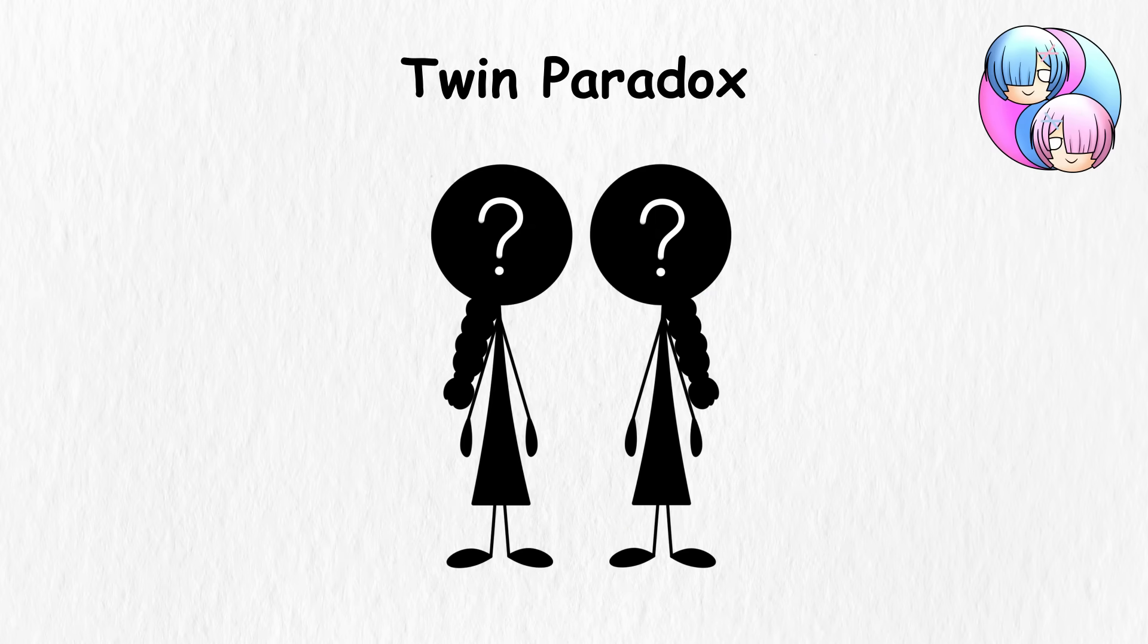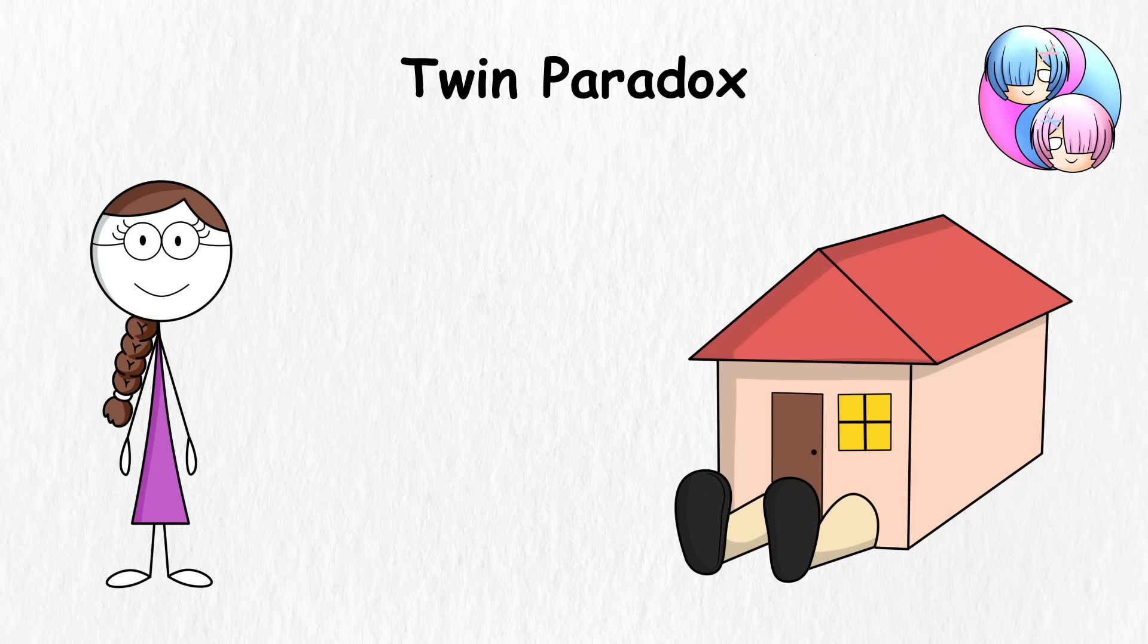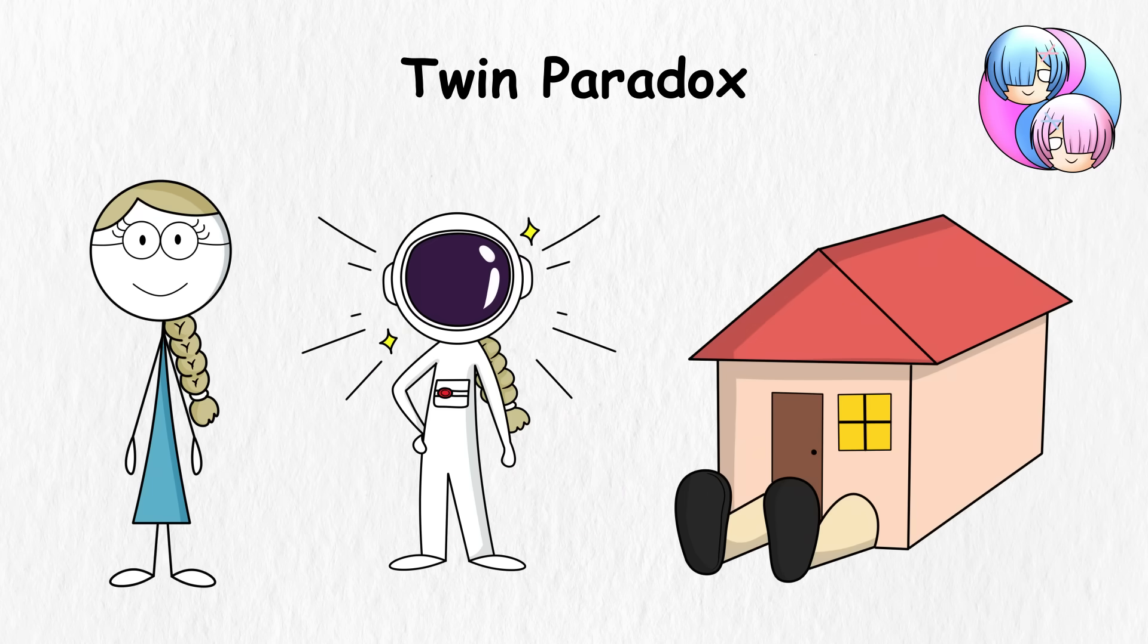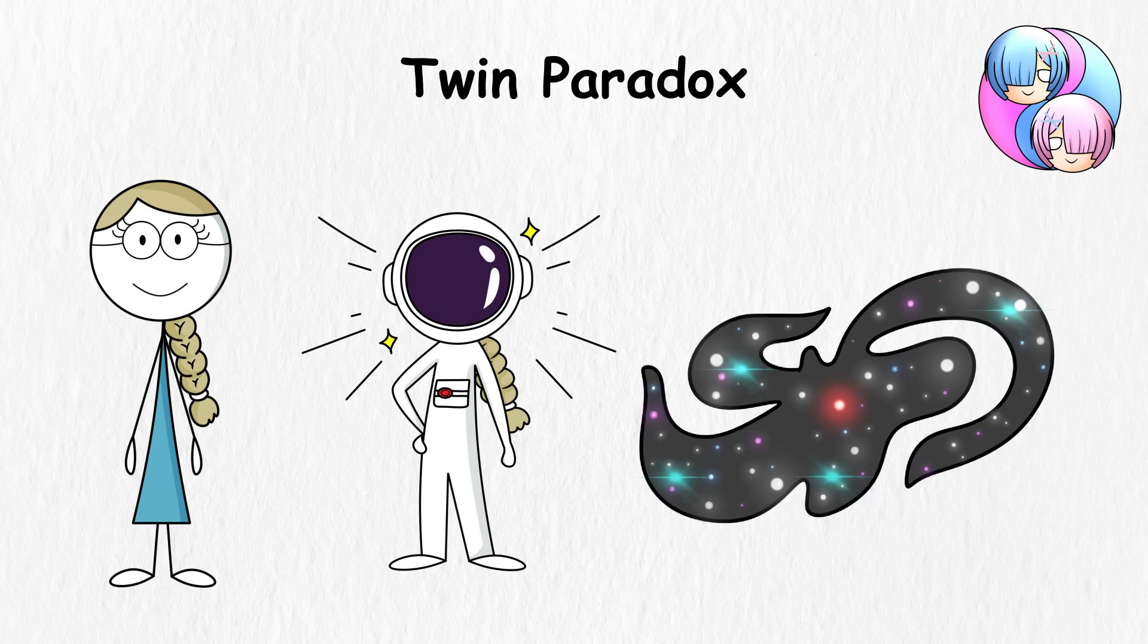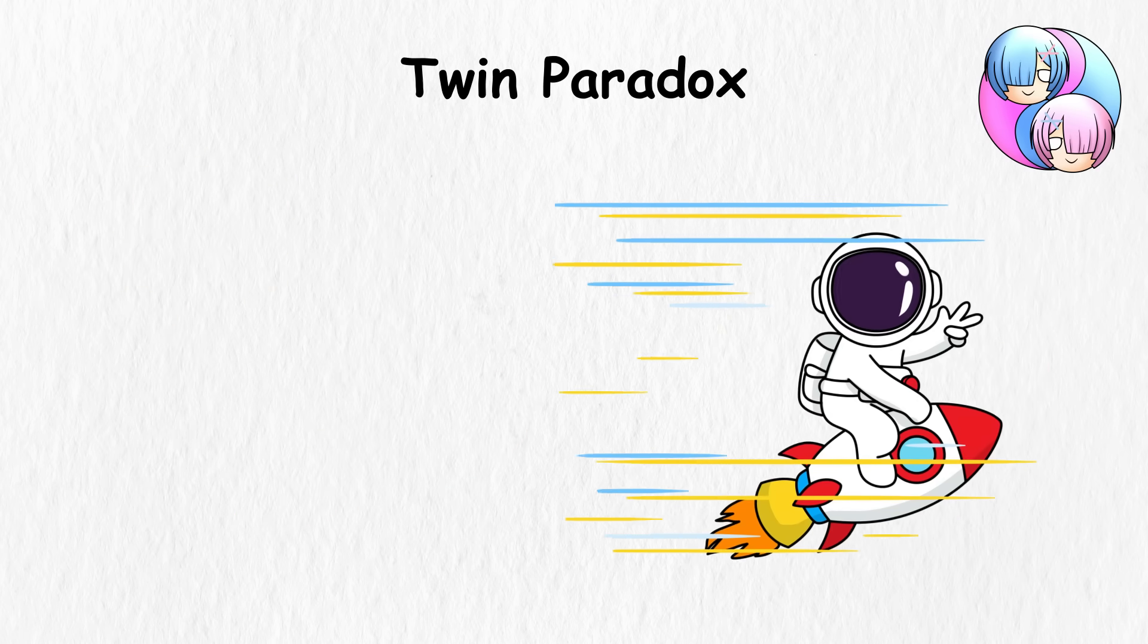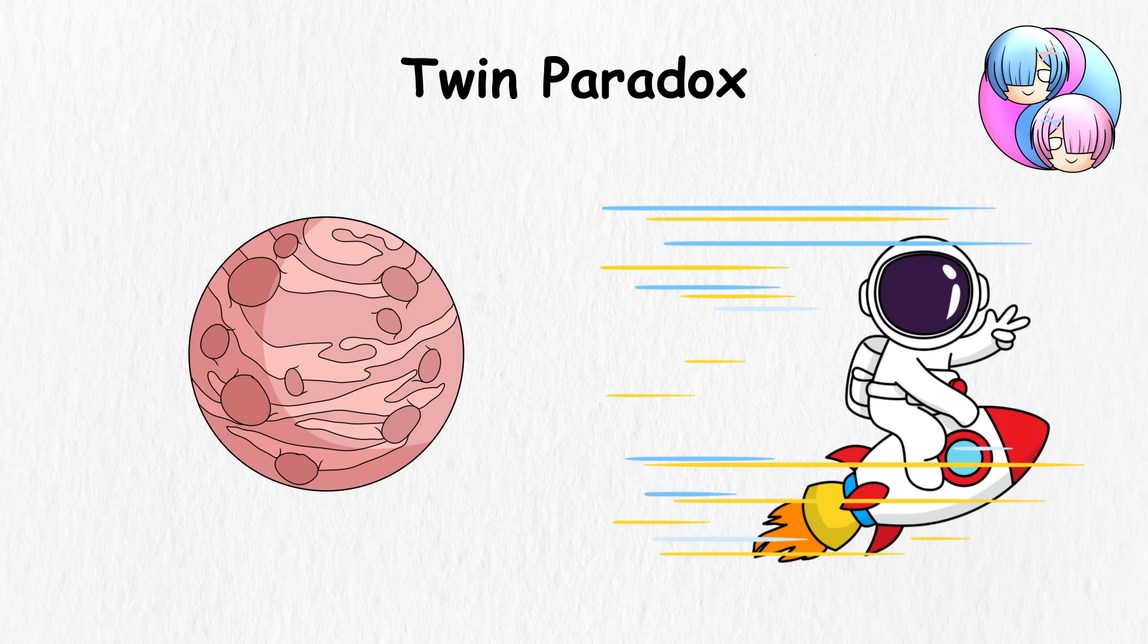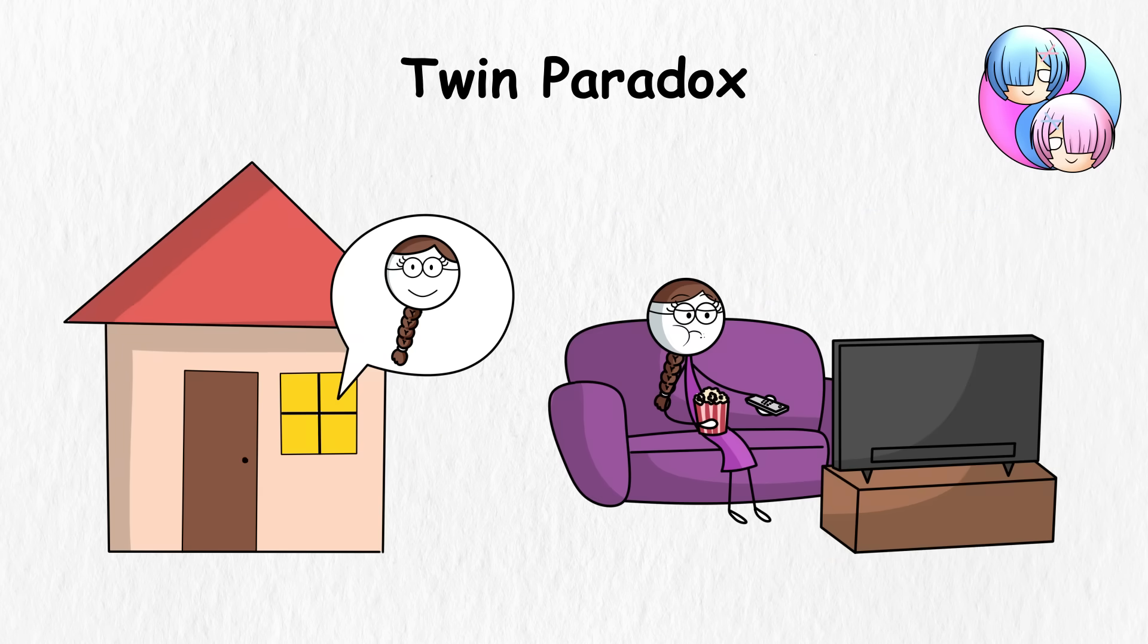Twin Paradox. Let's look at two twins. One is Anna, a homebody who just loves staying at home to binge all the Netflix shows. Meanwhile, Eve is an adventurous astronaut trained to travel the cosmos. One day, Eve hops into her spaceship and flies at near light speed to boldly go where no man has before. Meanwhile, Anna stays home, munching on popcorn while flipping between movies.